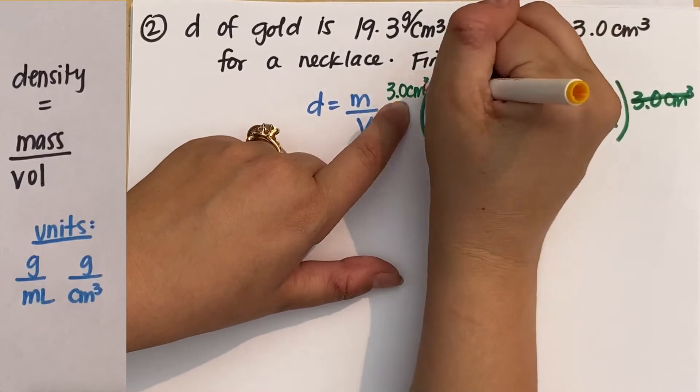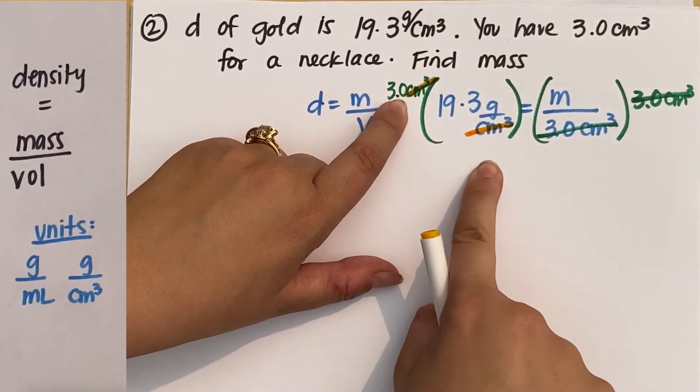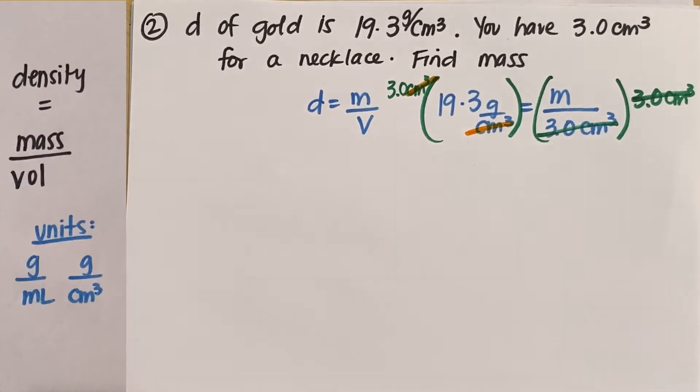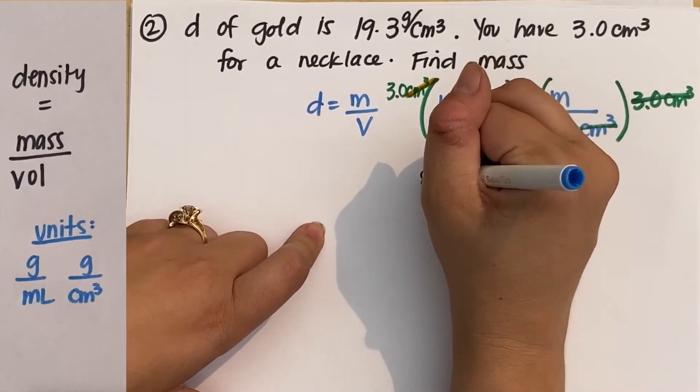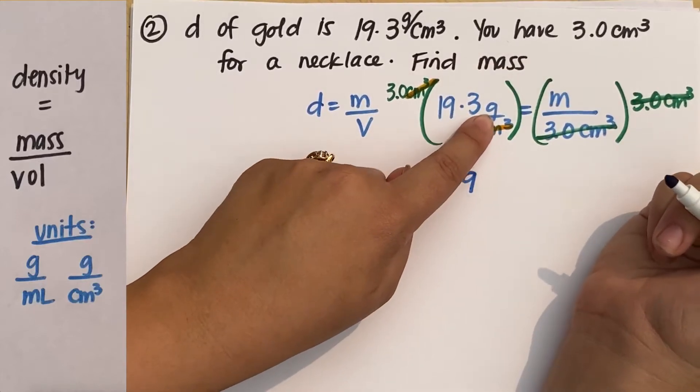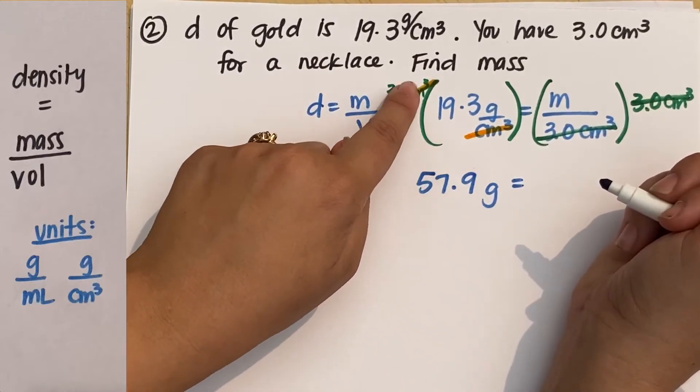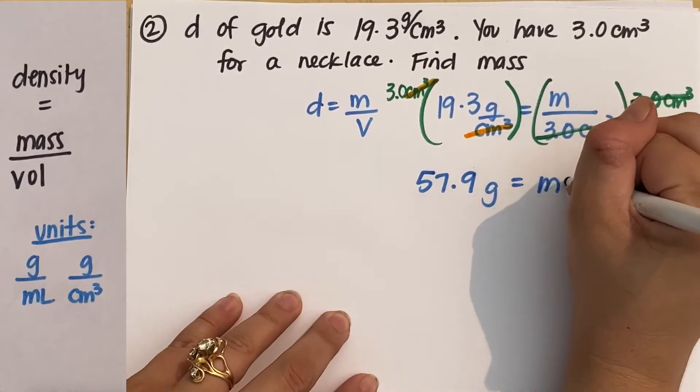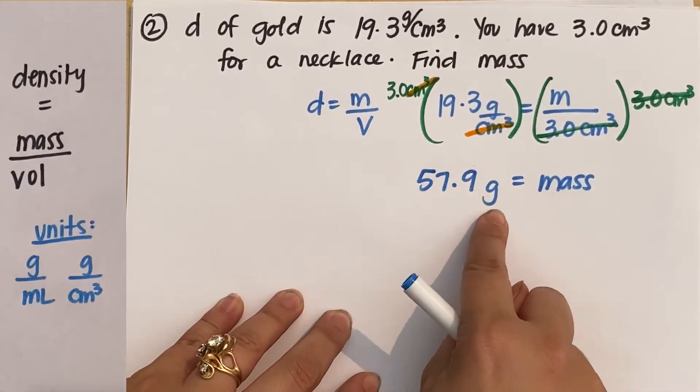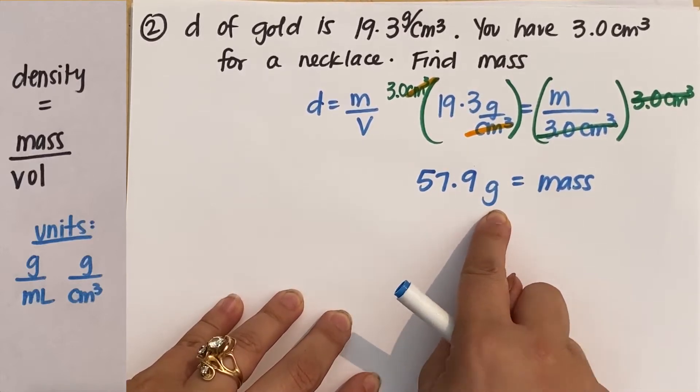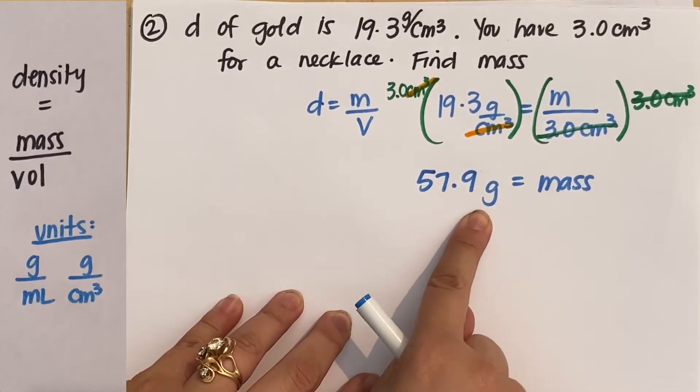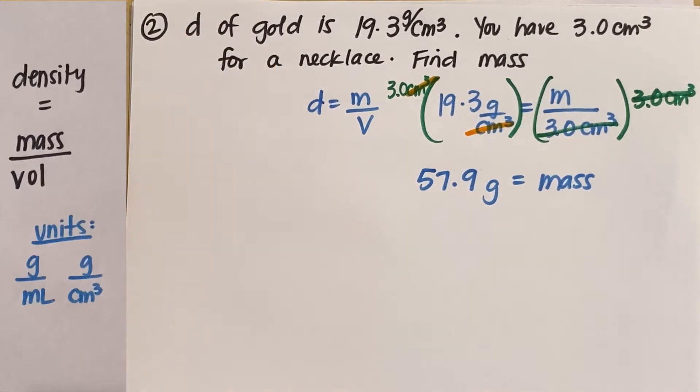My units cancel, which is really good because then I'll get 19.3 times three, which gives me an answer of 57.9. And then I'm in units of grams because centimeters cubed cancel. And this would equal my mass. And grams is a unit of mass. So you always want to double check your units to make sure that you're solving this correctly. If you set this up correctly, your units should cancel out and you should get exactly the unit you need for whatever you're solving for. So hooray, I'm done.